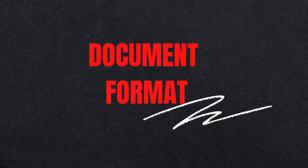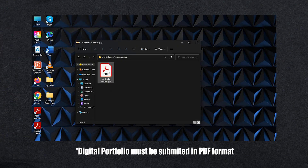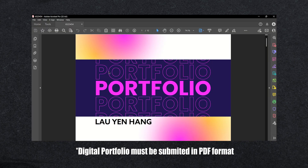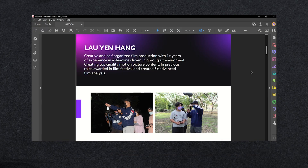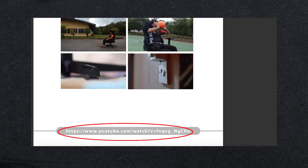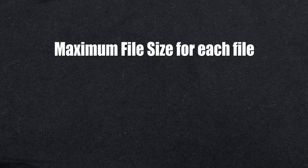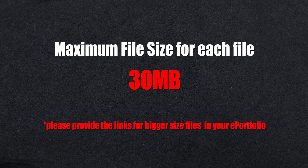Document Format: You may submit your digital portfolio content as a series of documents in PDF format. The PDF file may list all links to your videos and your best work. Web page links such as Canva and Wix, or video links such as YouTube or Vimeo, should be embedded in the PDF file as well. The maximum file size of the submitted document is 30MB, but you can provide links to files exceeding the 30MB allocation.